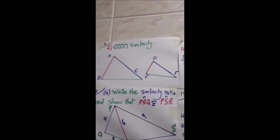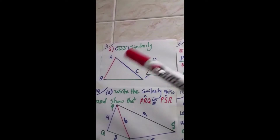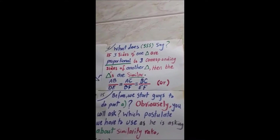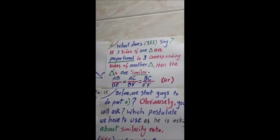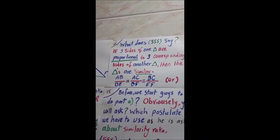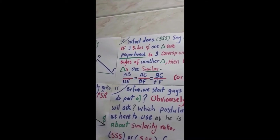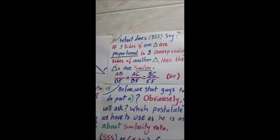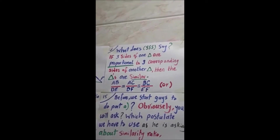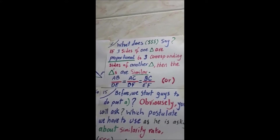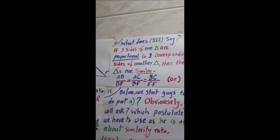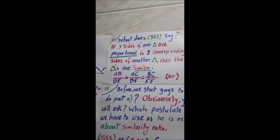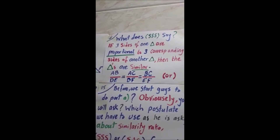Let me go to case two: side-side-side similarity. We have triangles ABC and DEF. If three sides of one triangle are proportional to three corresponding sides of another triangle, then these triangles are similar. That means AB/DE = AC/DF = BC/EF.